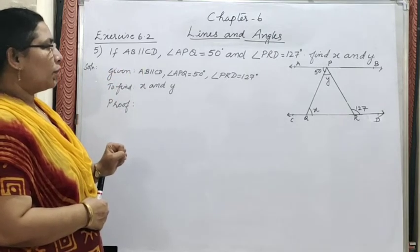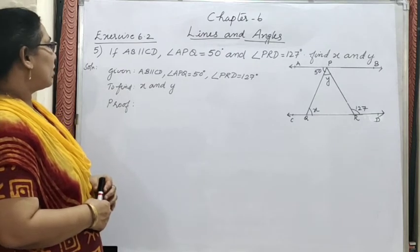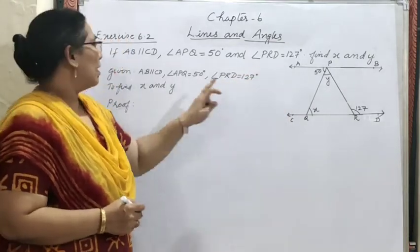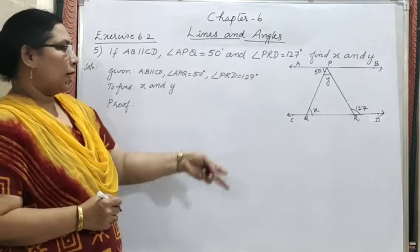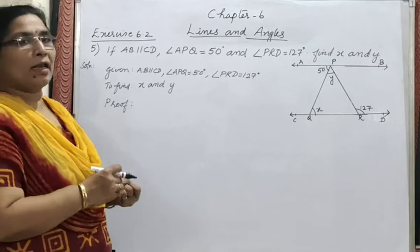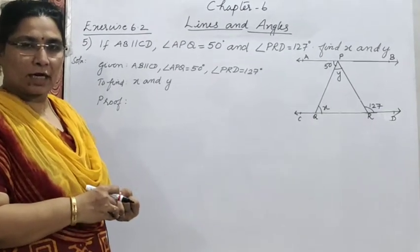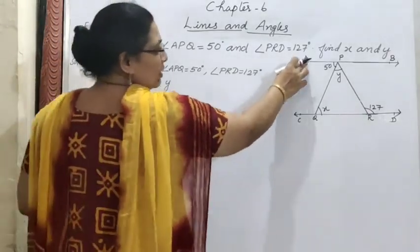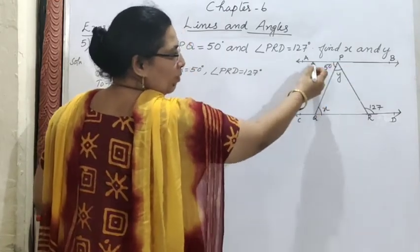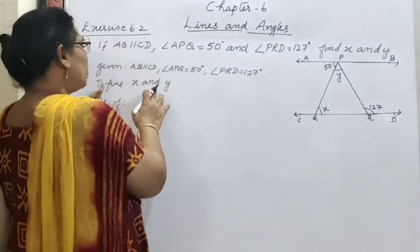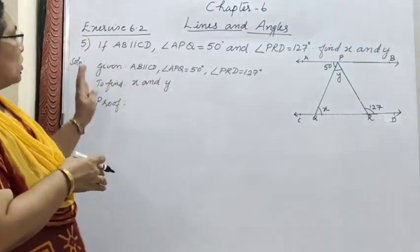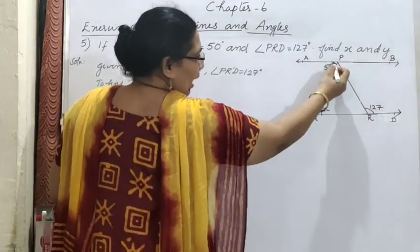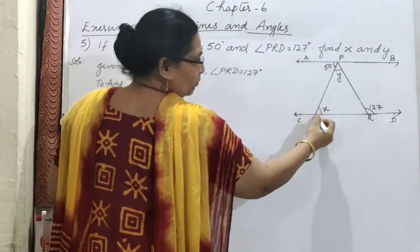Fifth question: if AB is parallel to CD, angle APQ equal to 50°, angle PRD equal to 127°, find x and y. Given: AB parallel to CD. These two lines are parallel. The properties we have studied — corresponding angles are equal, alternate interior angles are equal, co-interior angles are supplementary. PQ is the transversal.